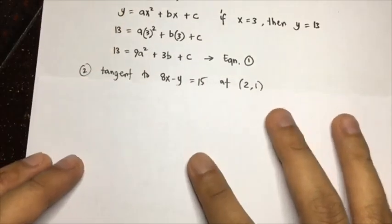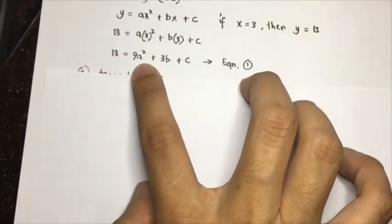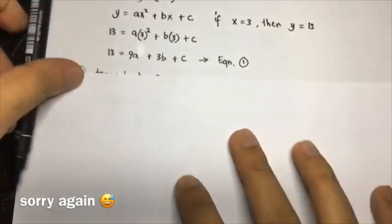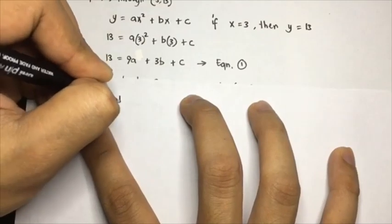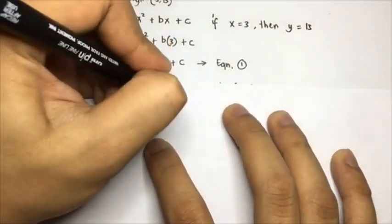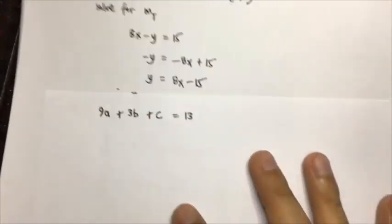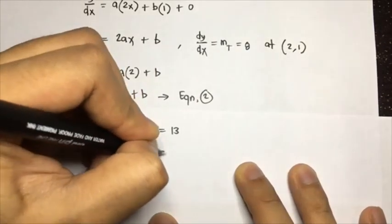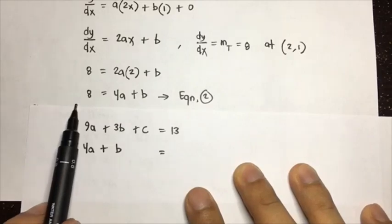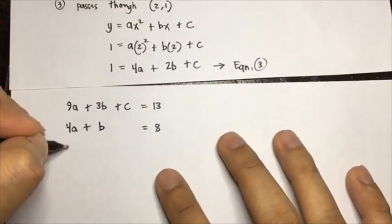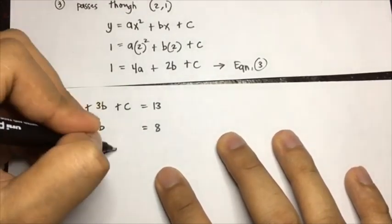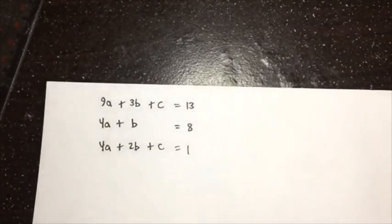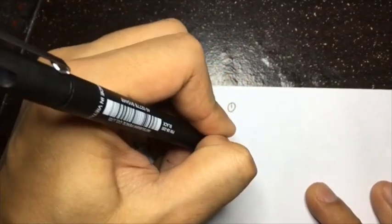Listing all three equations: Equation 1 is 9a + 3b + c = 13. Equation 2 is 4a + b = 8. Equation 3 is 4a + 2b + c = 1. We will solve this system using the elimination method.